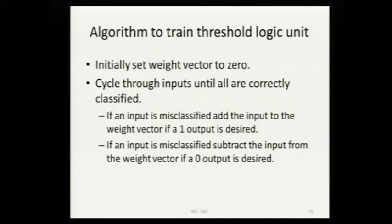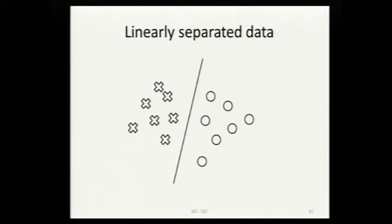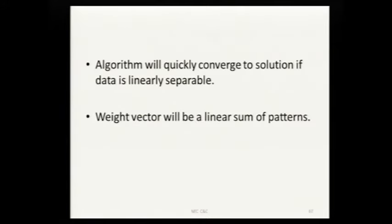Let me give you the algorithm to train a threshold logic unit. Initially, you set the weights to zero. Then you cycle through all inputs. If the input is misclassified and you want a one output, you add the input to the weight factor. If you want a zero output, you subtract the input from the weight factor. One thing to remember: the weight factor will be a linear sum of patterns. We set the weight factor to zero, and every time we change it, we either add or subtract an input. If your data is linearly separable, this algorithm will quickly converge to a set of weights which will separate the data.